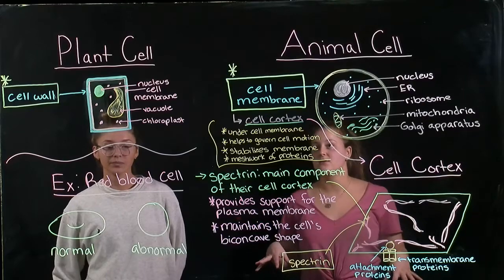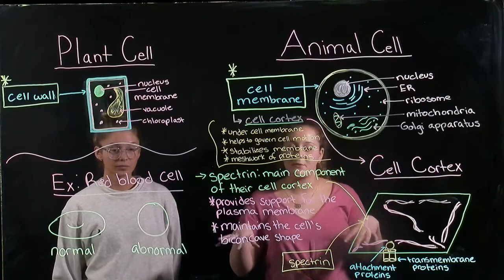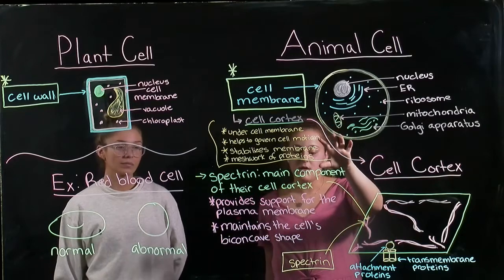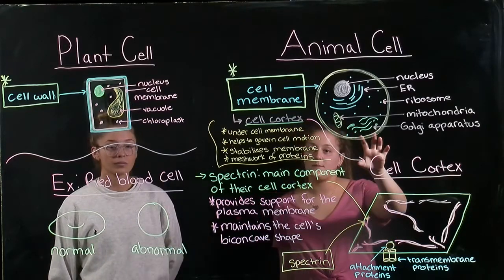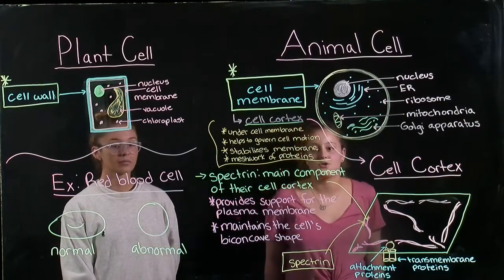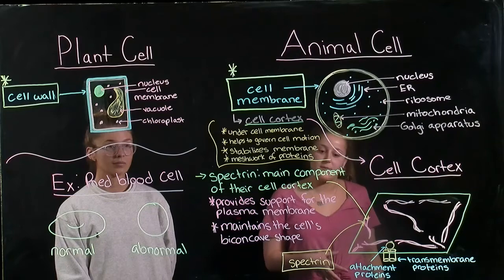In animal cells, other than the differences we've previously discussed, they have something called a cell cortex, which is a meshwork of filamentous proteins. It is right under the cell membrane and helps to govern cell motion in addition to stabilizing the membrane.